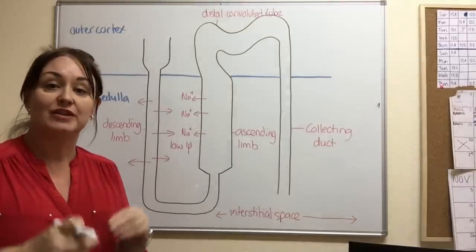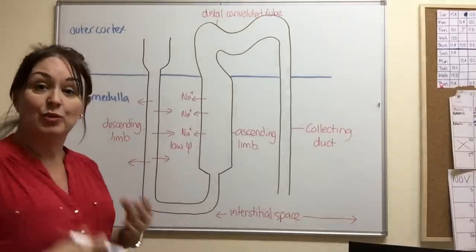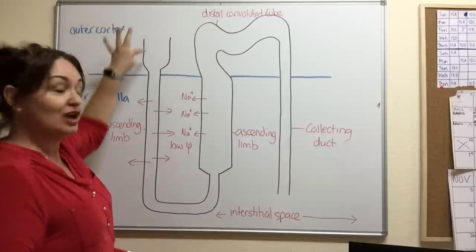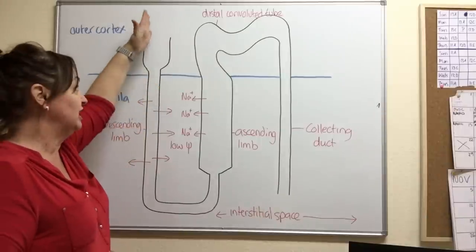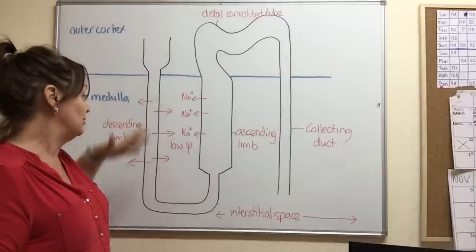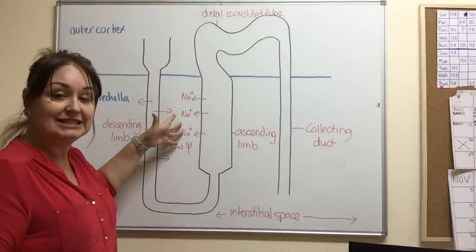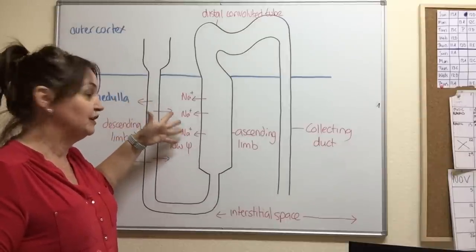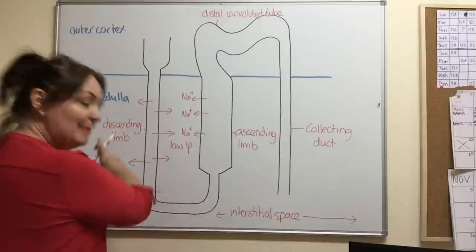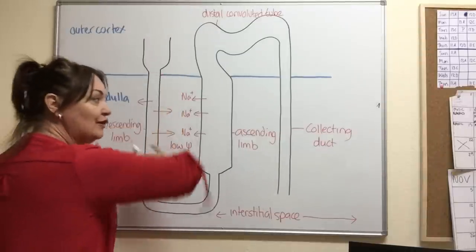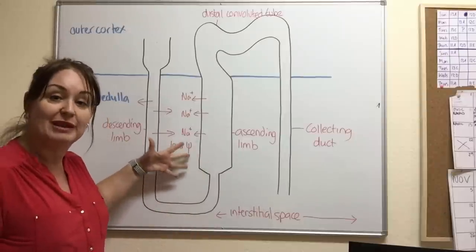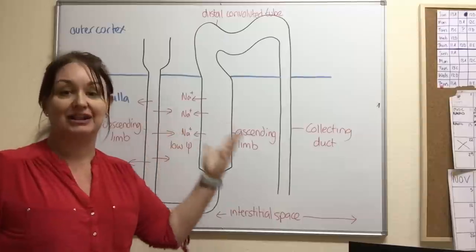But if you remember we said that the walls of the descending limb were permeable to water. So what happens is the filtrate as it passes through here, it's very watery, comes through and the water moves out from the descending limb into the interstitial tissue fluid by osmosis. And of course remembering that this is overlapped by lots and lots of blood capillaries and as that water moves out of the tube, it then moves into the blood capillaries and away.